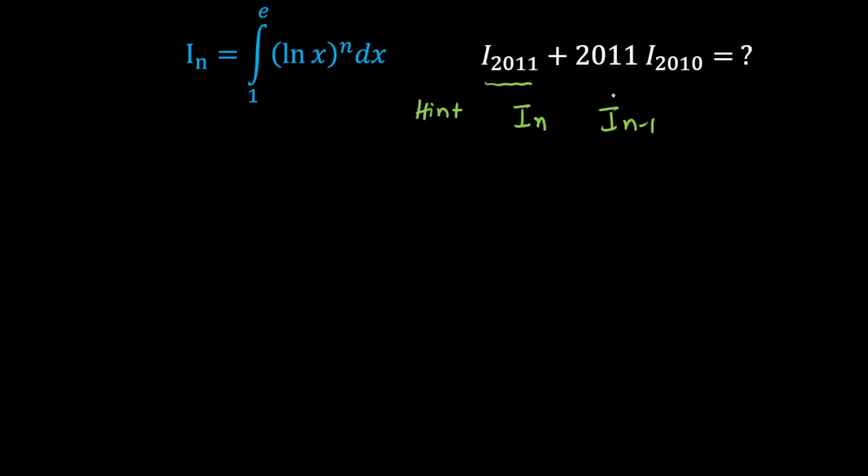That means they are asking a reduction formula in I of n and I of n minus 1. Don't worry about the constant, it will automatically adjust. So that means we have to derive an expression for which we have I of n, I of n minus 1. Automatically we will get the answer.